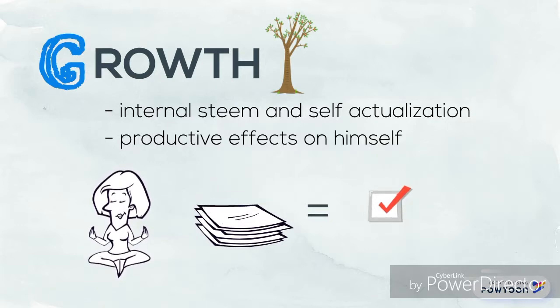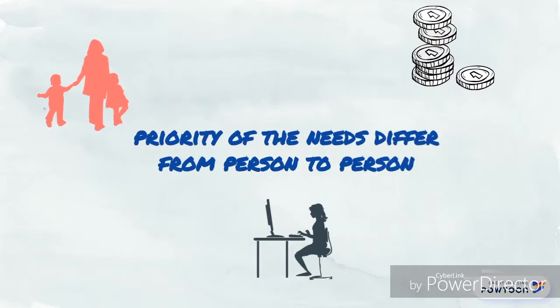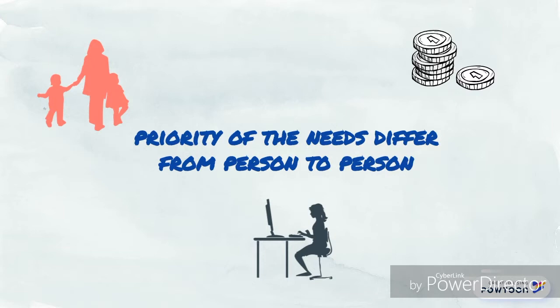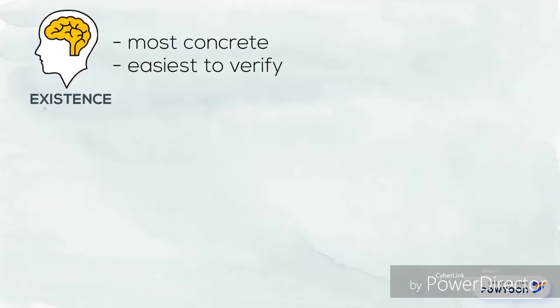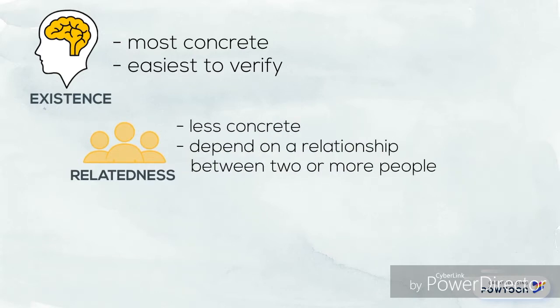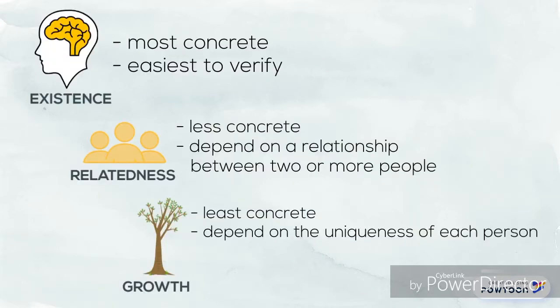Even though the priority of these needs differs from person to person, Alderfer's ERG Theory prioritizes in terms of the category's concreteness. Existence needs are the most concrete and easiest to verify. Relatedness needs are less concrete, depending on the relationship between two or more people. Finally, growth needs are the least concrete, as their specific objectives depend on the uniqueness of each person.